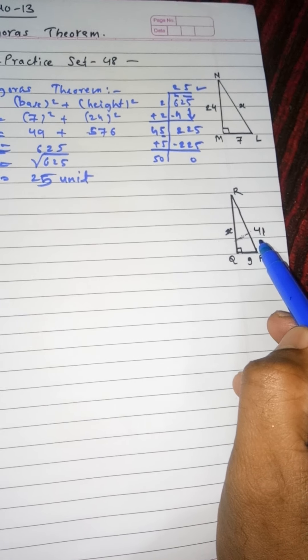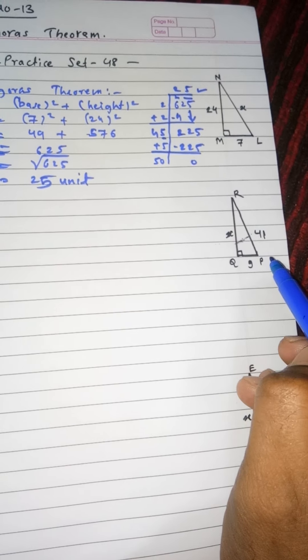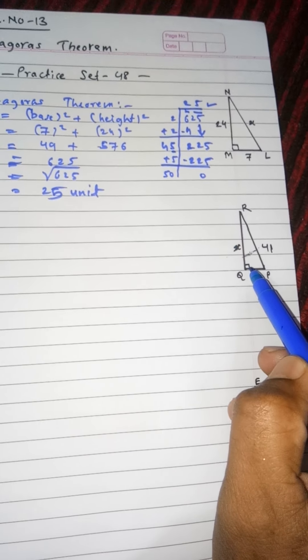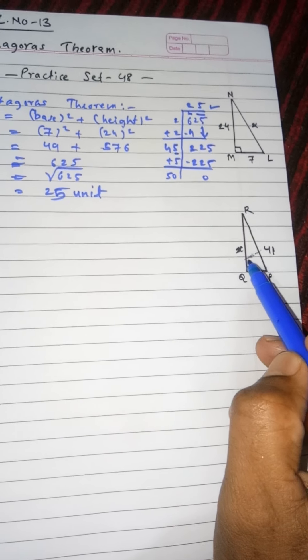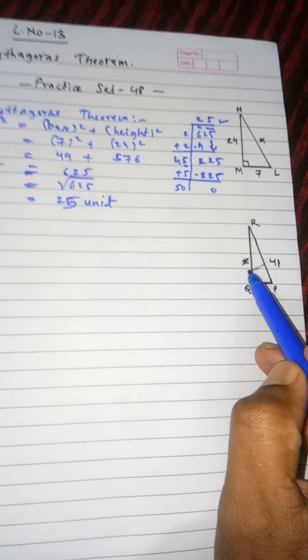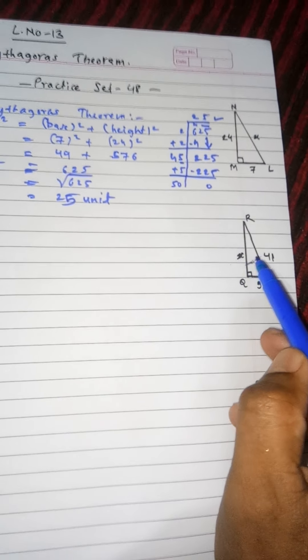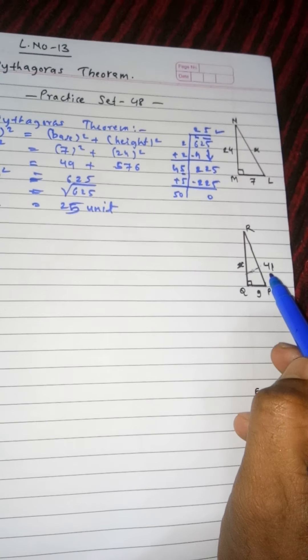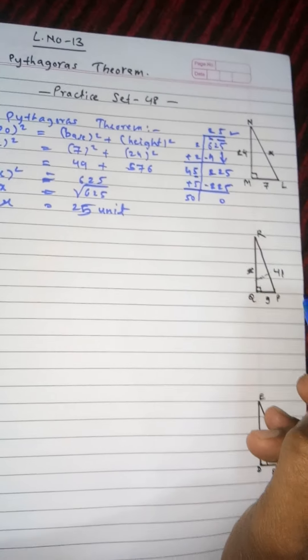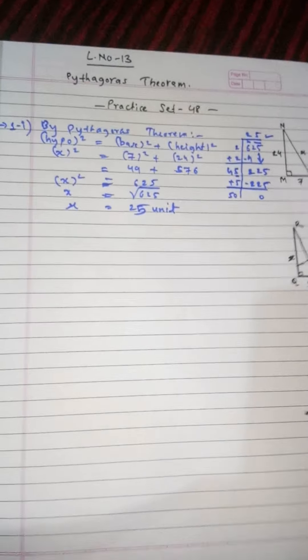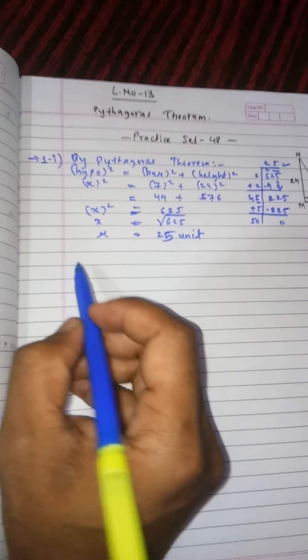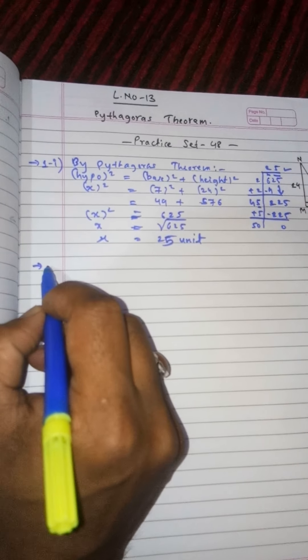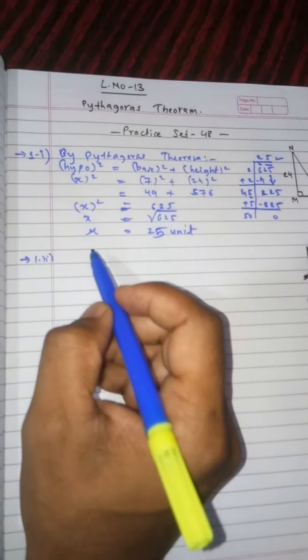See here now, PQ with 9 units, RP with 41, QR with x that we have to find, and RP is our hypotenuse with 41 units. Same method we will follow, so inshallah you will enjoy the same type of example.